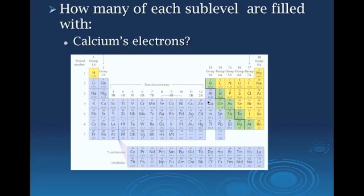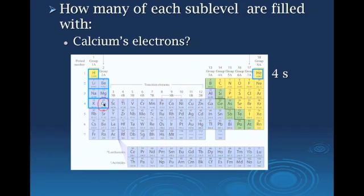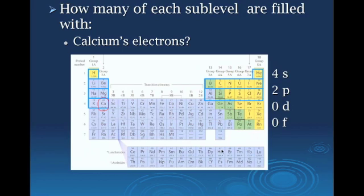Last example: calcium is in the fourth energy level, second group. To reach calcium, we go through four complete S sub-levels. For P, we read through two complete P's but didn't reach the third. We didn't make it to any D's — we got close but not quite there — and no F's either.